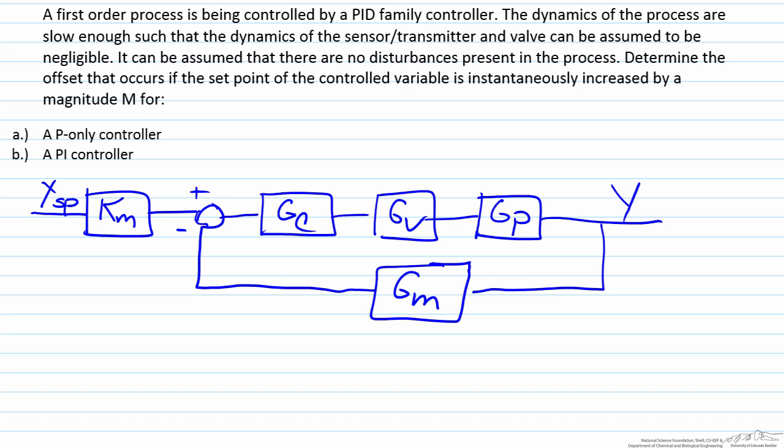In this screencast we'll take a look at how the selection of your controller type in the PID family can influence the final steady state value of your process due to a set point change. We've provided a block diagram for a generic feedback control system, the first order process being controlled by a particular PID family controller.